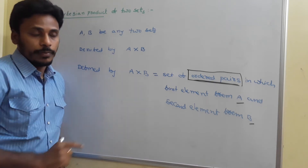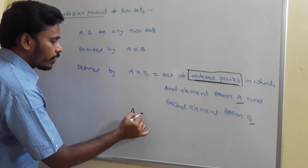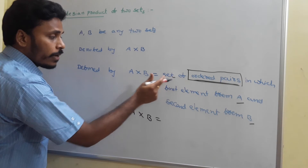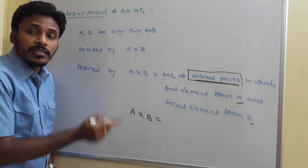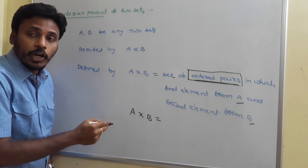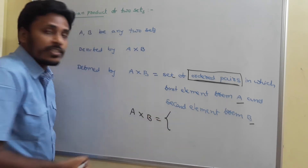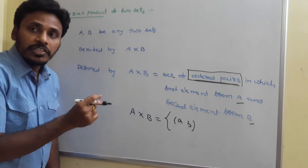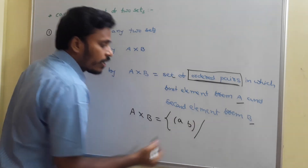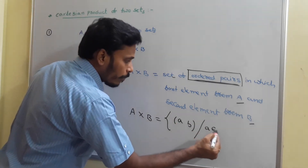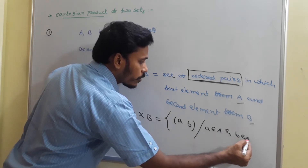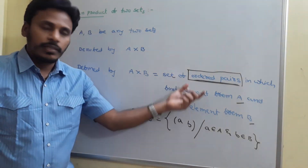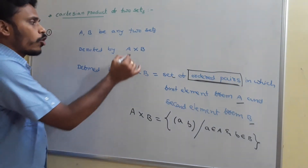In another way: A cross B is the set of ordered pairs (a, b) such that the first element, small a, belongs to the first set A, and the second element, small b, belongs to the second set B. This is the definition of A cross B, and A cross B is simply the Cartesian product of two sets.